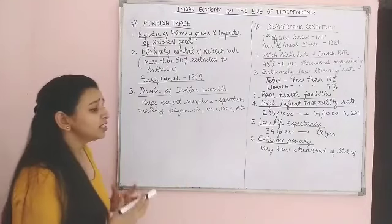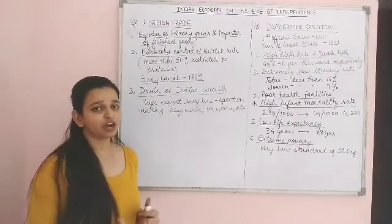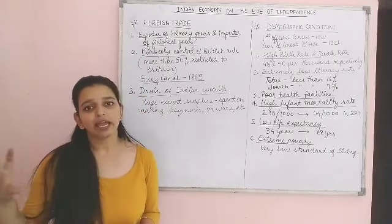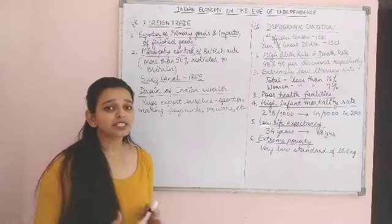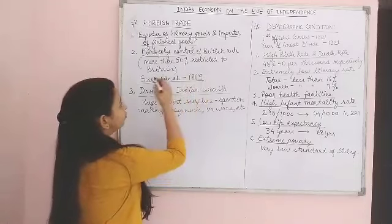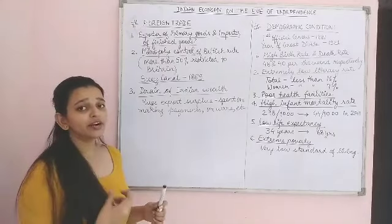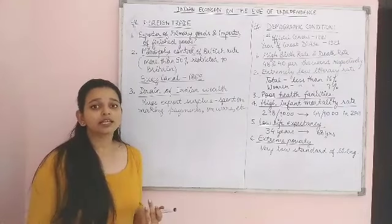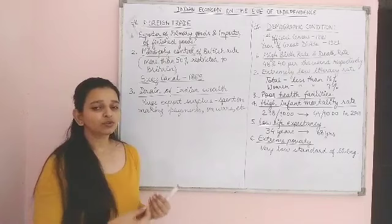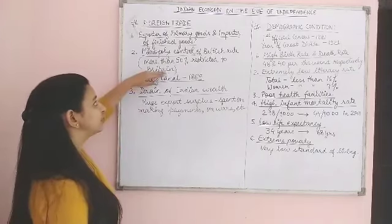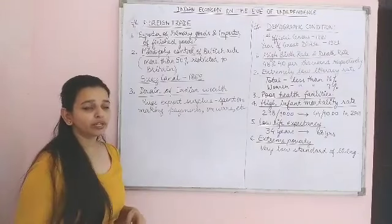In Indian foreign trade during the British rule, there was a monopoly. The British government held a monopoly — more than 50%, around 55–60% of India's foreign trade was restricted to Britain. Some trade also happened with countries like Ceylon, China, and Persia (Iran). But mainly, foreign trade was restricted to Britain — exporting raw materials and importing finished goods.